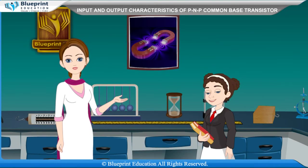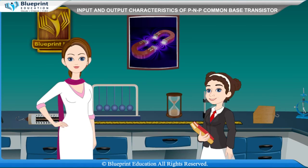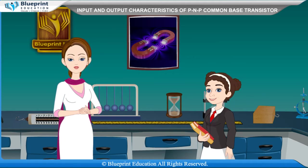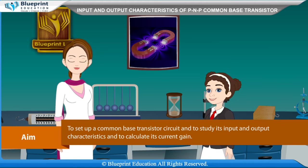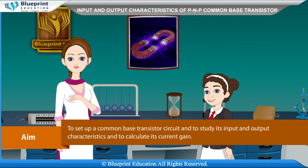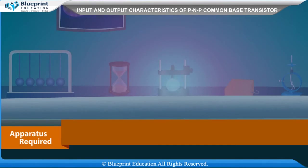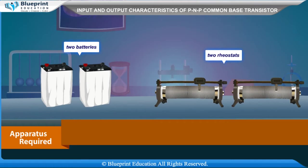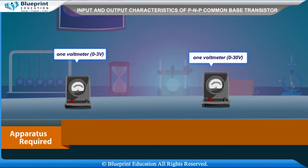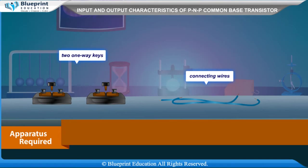Let's do an experiment to set up a common base transistor circuit and study its input and output characteristics and calculate its current gain. Apparatus required: a PNP transistor 2N2A, 2 batteries, 2 rheostats, 1 voltmeter (0 to 3 volt), 1 voltmeter (0 to 30 volt), 2 one-way keys, and connecting wires.